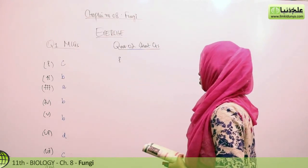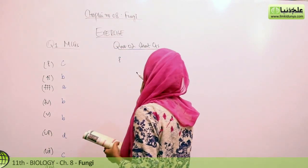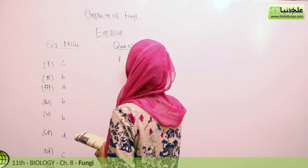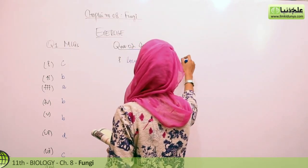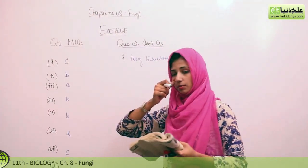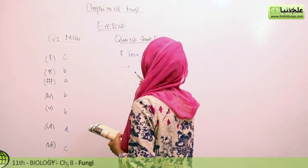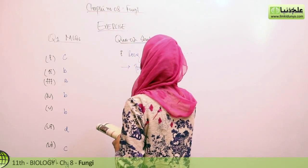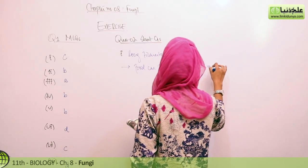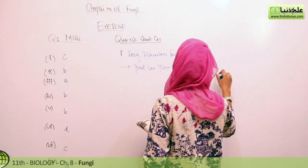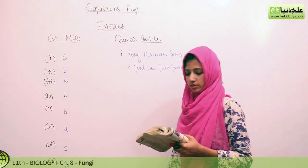Coming to question number two, that is about the short questions. The first question is, what is hyphae and what is the advantage of having incomplete septa? Hyphae is long filamentous body. Actually, the first page is on the page, and you can read the whole definition along with the mycelium. Incomplete septa function, the advantage is that food can flow freely or that will increase in the length of filament. Fast growing system ho jayega.